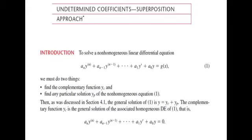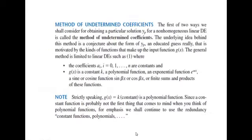The complementary function YC is the general solution of the associated homogeneous differential equation. Given a higher-order linear differential equation with constant coefficients, the associated homogeneous equation is formed by setting the right-hand side to zero. We first solve the left-hand side to obtain YC, and then we further proceed with the right-hand side solution to find YP.